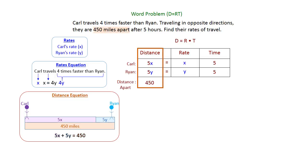We now have our two equations: X = 4Y and 5X + 5Y = 450. It's set up really nicely for us to use substitution to solve it. We're going to take the first equation and drop that 4Y in for X in the second equation.